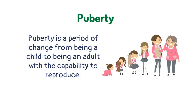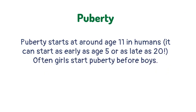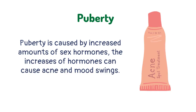Puberty is a period of change from being a child to being an adult with the capability to reproduce. Puberty starts at around age 11 in humans, and often girls start puberty before boys.